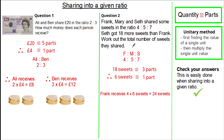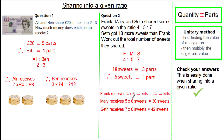Mary has 5 parts, and 1 part is equivalent to 6 sweets, so it's 5 times 6, giving Mary 30 sweets. Lastly, Seth receives 7 parts, and 1 part is equivalent to 6 sweets, so 7 times 6 is 42. Adding all of these sweets, we have a total of 96 sweets.